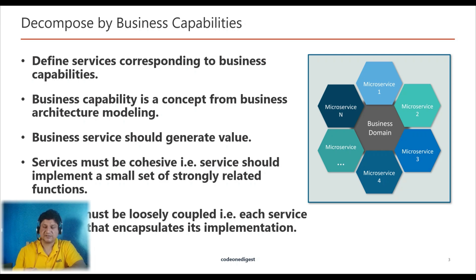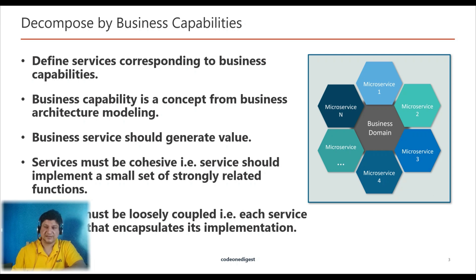When a large, complex application is to be built using microservice architecture, the major problem is how to design loosely coupled microservices, or how to break a large application into small loosely coupled services. There are some prerequisites for decomposition of microservices: first, a service must be cohesive — it should implement a small set of strongly related functions; and second, services must be loosely coupled — each service has an API that encapsulates its implementation.